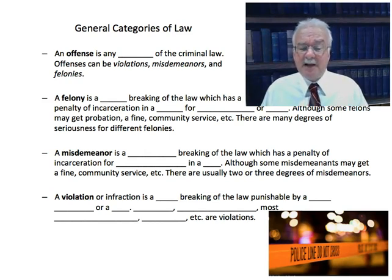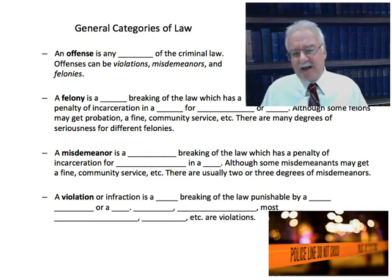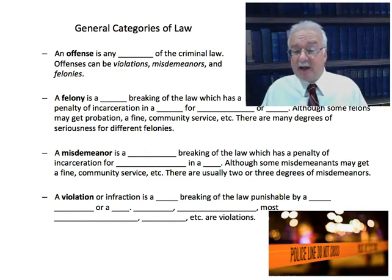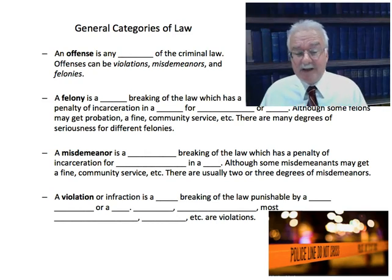There are usually two or three degrees of misdemeanors. Finally, a violation, also called an infraction, is a minor breaking of the law punishable by a short jail stay or a fine. Jail stays are very rare for violations unless the person keeps committing the same violation because they find it easier to pay the fine than comply with the law. Loitering, disorderly conduct, most traffic infractions, jaywalking — these are all examples of violations.